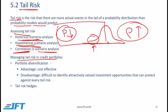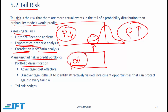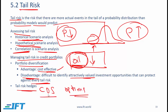Managing tail risk in credit portfolios: the most basic technique is portfolio diversification. For example, a portfolio with high exposure to the oil industry could diversify by including bonds from the airline sector, which tends to do well when oil prices come down. This is relatively cost effective, but it's often difficult to identify attractively valued opportunities that protect against every tail risk. Tail risk hedging uses instruments such as credit default swaps and options, which behave like insurance policies and can protect against extreme events, though the cost of these strategies tends to be high.